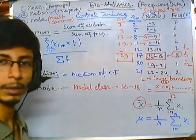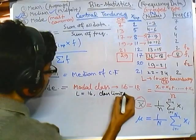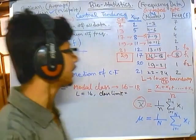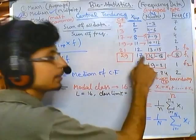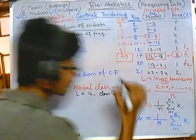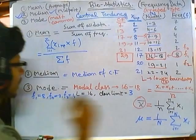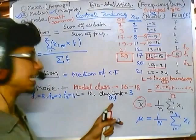Another important value is the class limit, also denoted as h. To calculate it, subtract lower limit from upper limit and add 1: 18 minus 16 is 2, plus 1 equals 3. So the class limit h is 3. Summarizing our values: f1 is 8, f0 is 2, f2 is 1, L is 16, and h is 3.